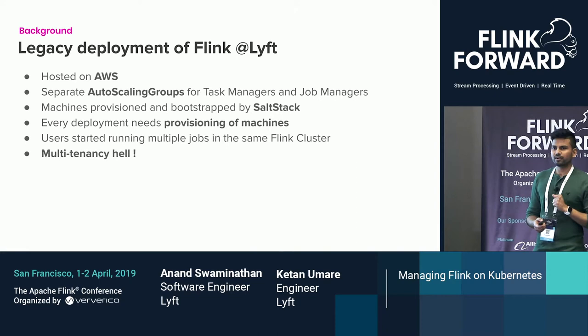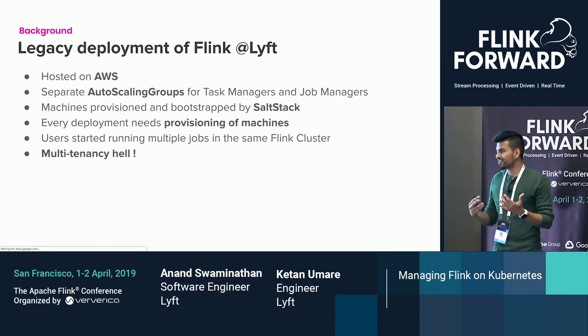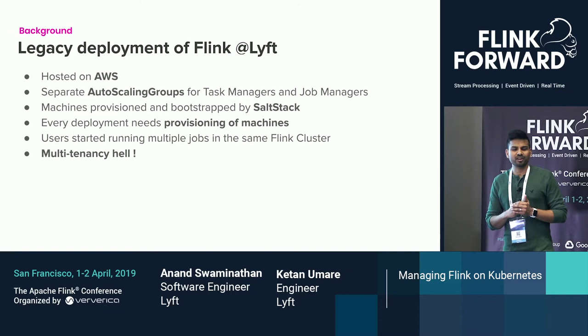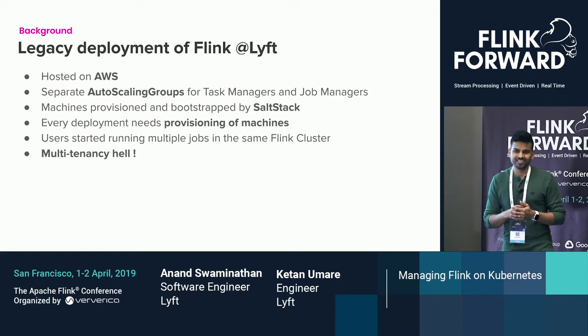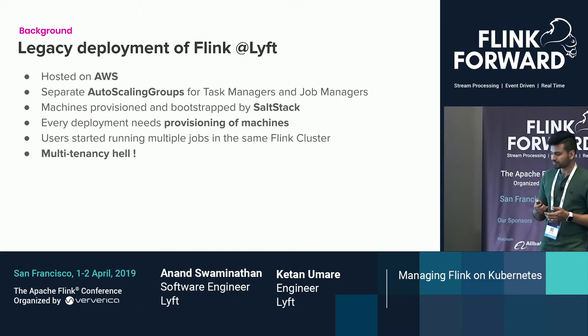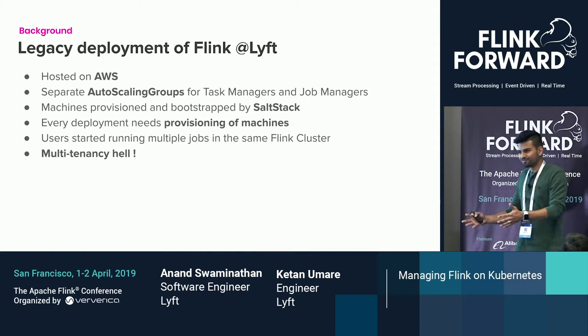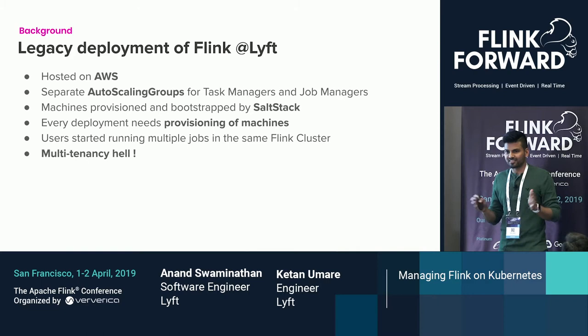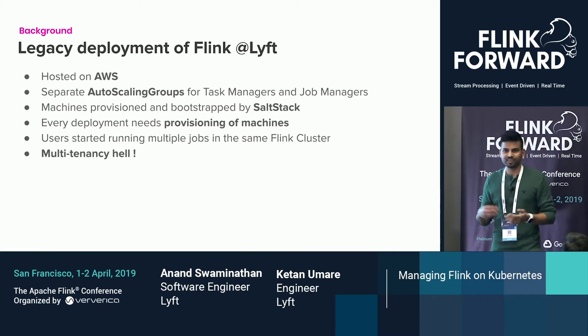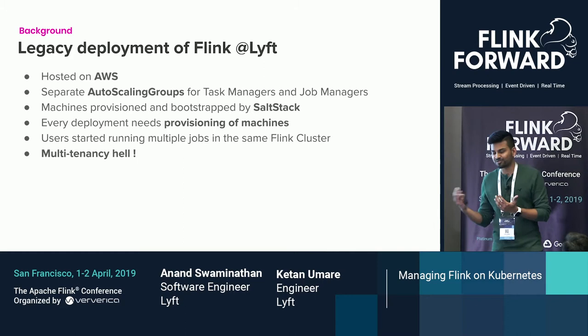We started thinking about how this would interact going forward, and observed the legacy stack. There's an AWS-hosted setup where we run job managers as separate auto-scaling groups, task managers as separate auto-scaling groups, and Zookeeper for HA. Otherwise, we run a single job manager and if it dies, we lose everything. Machines are provisioned using CloudFormation. Every deployment needs machine provisioning. When you add friction — like requiring users to start machines, create all this CloudFormation, create a repo — people start doing crazy things like running multiple applications on the same cluster, which causes multi-tenancy issues. And that's not Flink's strong point.